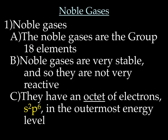We're going to start by talking about noble gases. Noble gases are the Group 18 elements — helium, neon, argon, krypton, xenon, and radon. Noble gases are really, really stable, so they are not very reactive. The reason they're so stable is they have what you call an octet, meaning eight valence electrons in the outermost energy level.